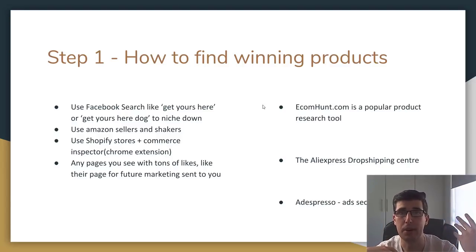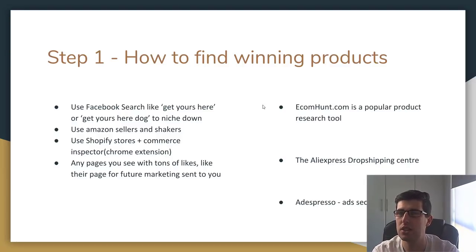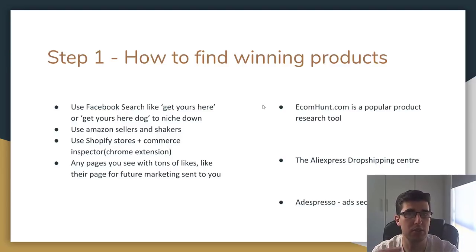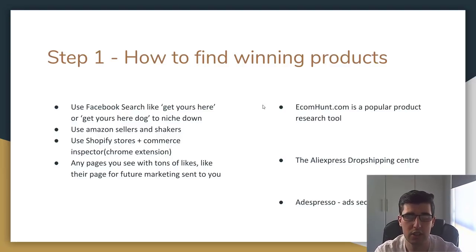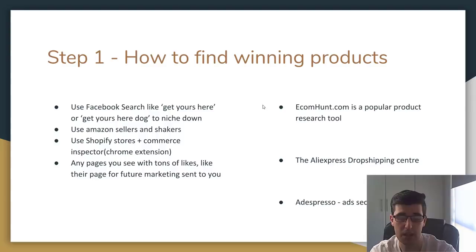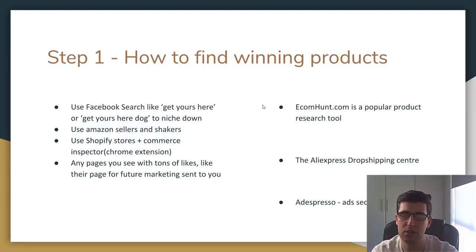My personal preference is a general niche store. There are technically three types of stores: a general store, a niche store, and a one-product store, which is popular currently. But I prefer a general niche store. Basically, you're within a niche - let's say it's everything dogs. It can be jewelry for dogs, t-shirts with dog stuff on it, dog collars, whatever. You're being specific but also a little general, so you're not really running a pure general store.